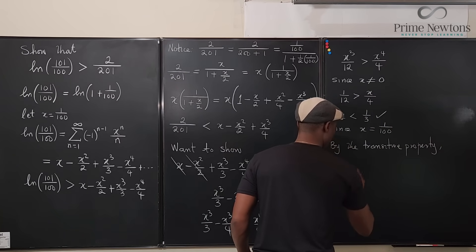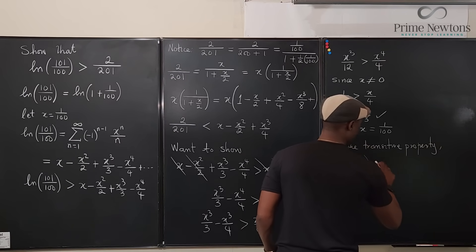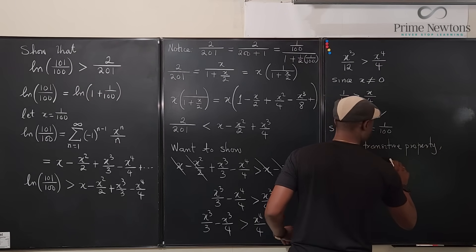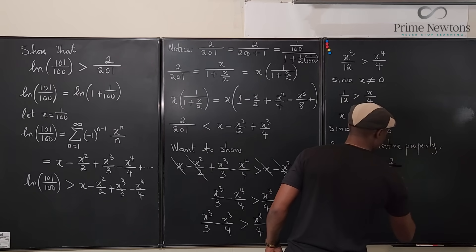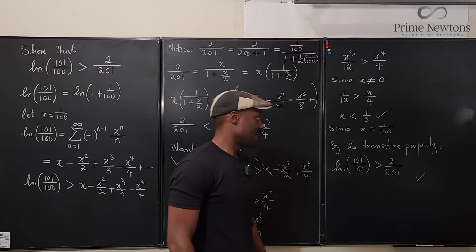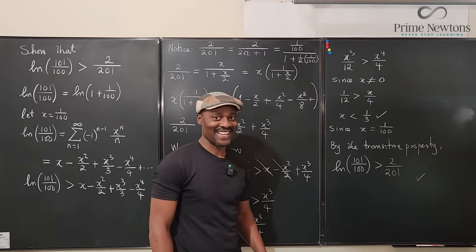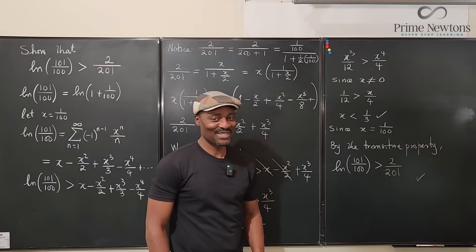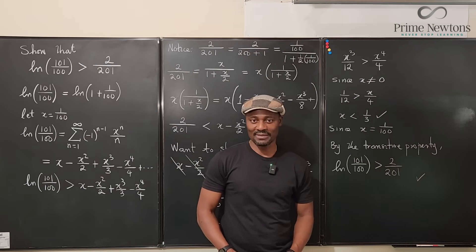Since we've shown that the natural log of 101 over 100 is greater than the middle expression, and 2 over 201 is less than that same middle expression, by the transitive property, the natural log of 101 over 100 is greater than 2 over 201. If it's not smooth enough for you, leave a comment. Never stop learning — those who stop learning stop living. Bye!